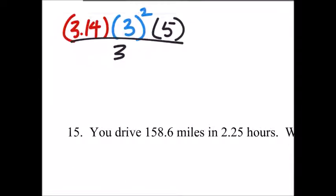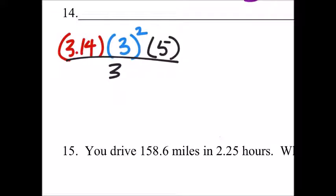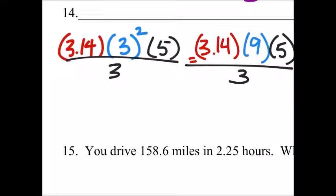There we go. Now we can see that. So, working this out, exponents first. We've got 3.14 times, that would be 3 times 3, which is 9, times the height, which we just said is 5. Now we can multiply.